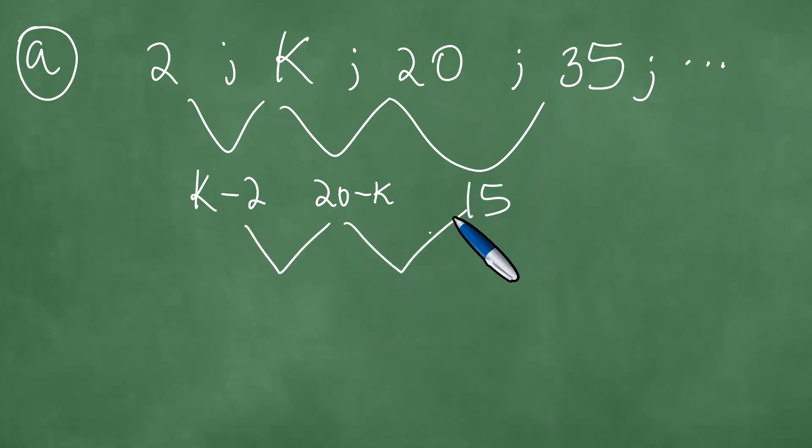Next, this term minus that term actually give 22 minus 2k. Then this minus that give us exactly k minus 5. Because this is a quadratic sequence, what we then have is, therefore, that this term must be equal to this.